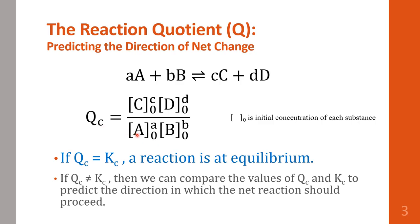Since Q looks exactly like K, if the value of Q equals the value of K, we know the reaction is at equilibrium. If we have a set of concentrations that give a value of Q not equal to K, the reaction is not at equilibrium. By comparing Q and K, we can predict the direction in which the net reaction should proceed — whether it will go to make more product or more reactant.